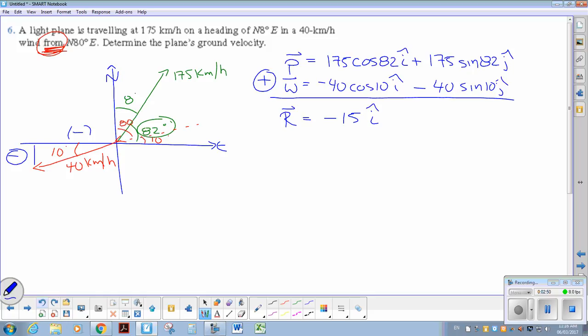Bracket 175 sin 82, plus bracket, negative 40 sin 10. So assuming I punch this into the calculator properly, 166.4j. There is my resulting vector.